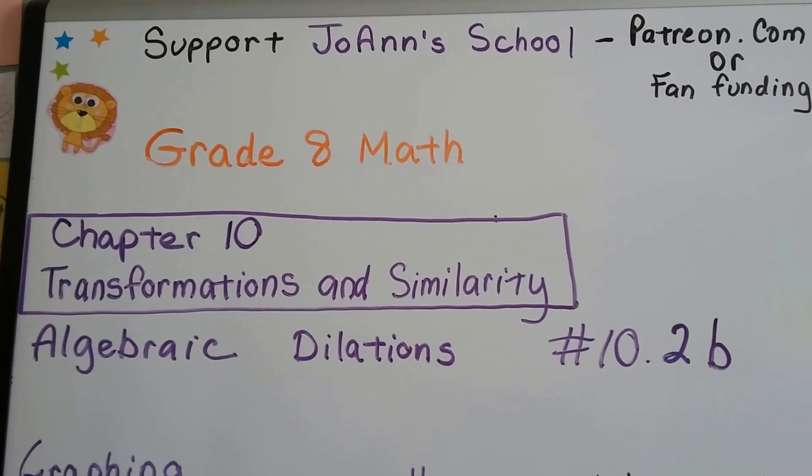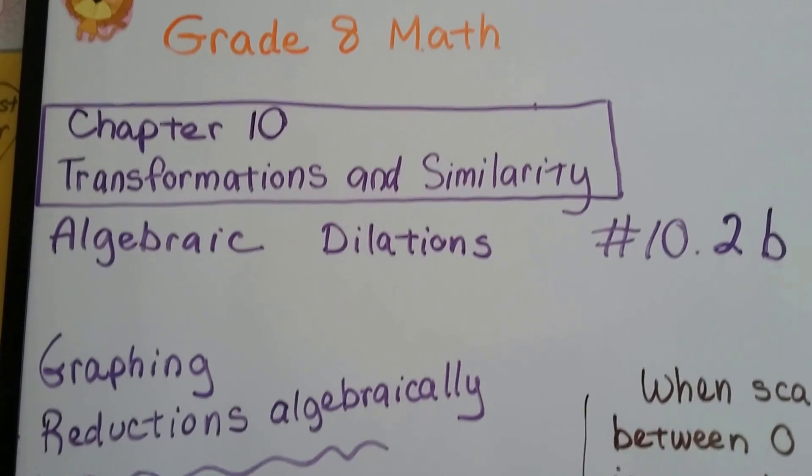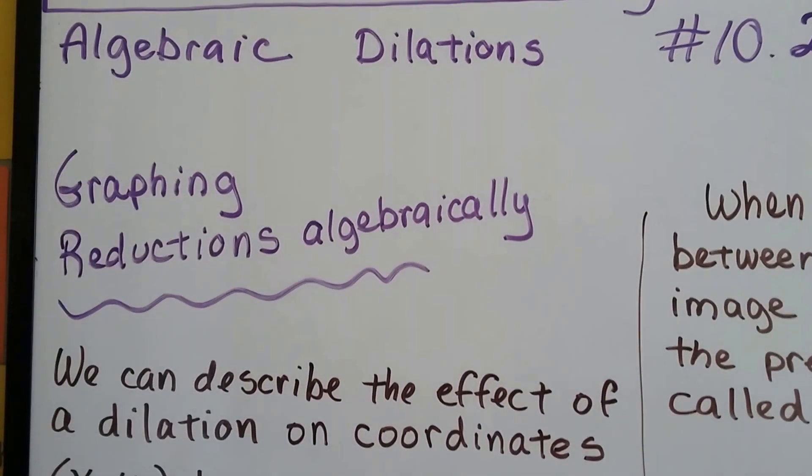Grade 8 math number 10.2b. We're doing algebraic dilations, and now we're going to be graphing reductions algebraically.